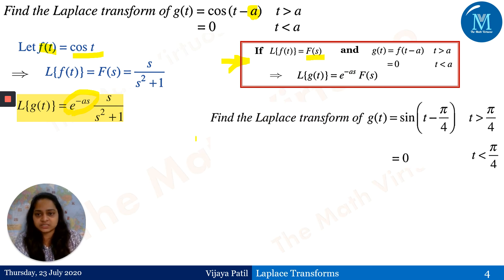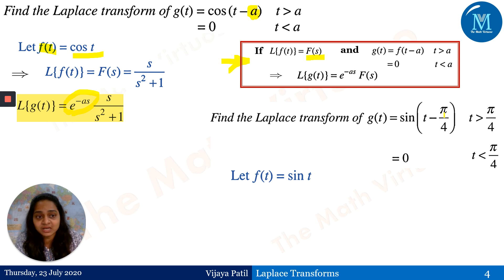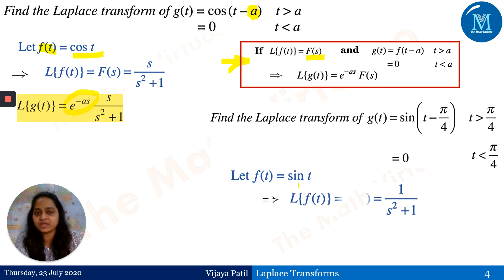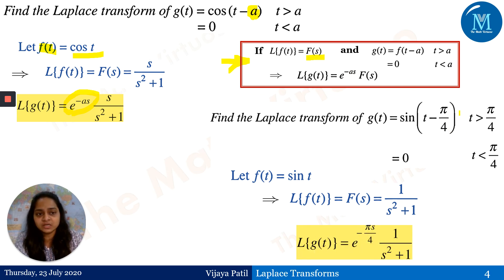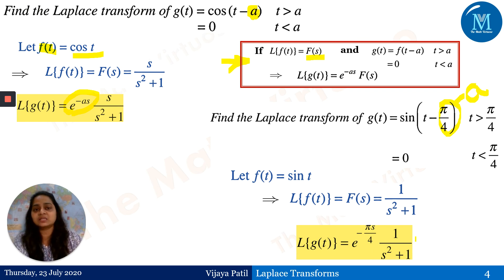Next example: g(t) equals sin(t minus π/4) for t greater than π/4, and zero for t less than π/4. Here, the function f(t) is sin(t), and the Laplace of sin(t) is 1 upon s squared plus 1. The value of a is π/4, so the Laplace of g(t) is e to the power minus πs/4 times 1 upon (s squared plus 1). The Second Shifting Theorem is very simple once you identify f(t) and a.